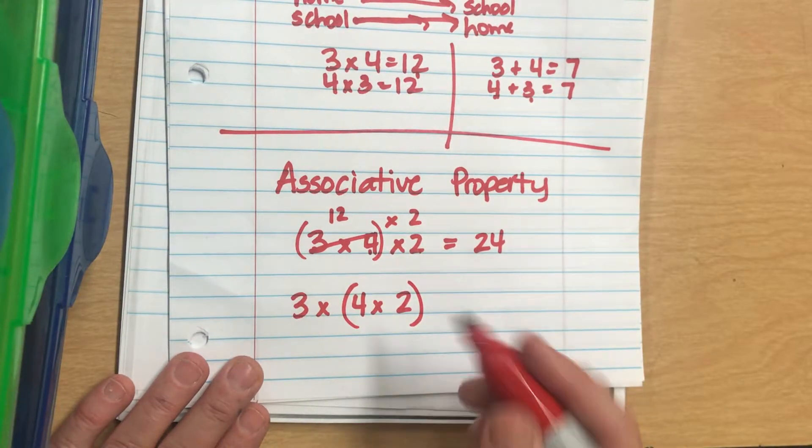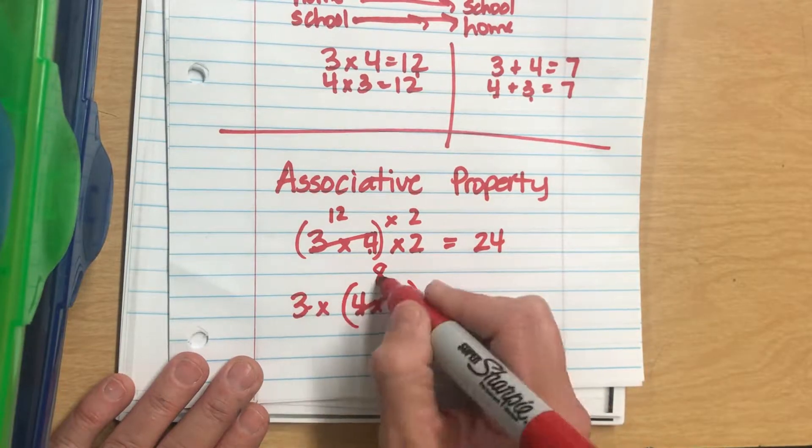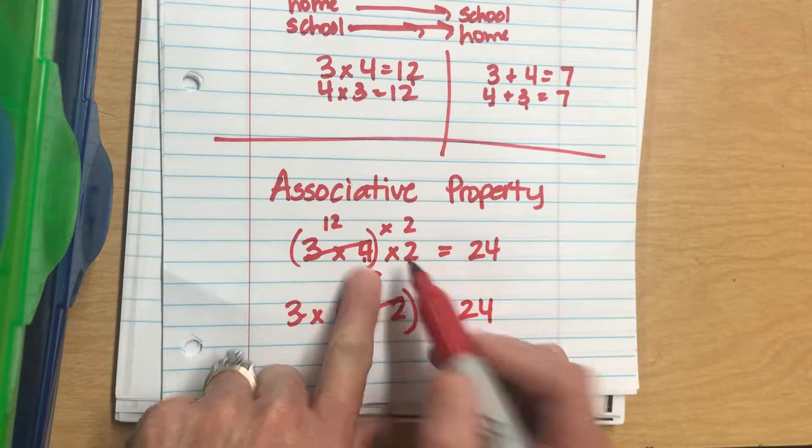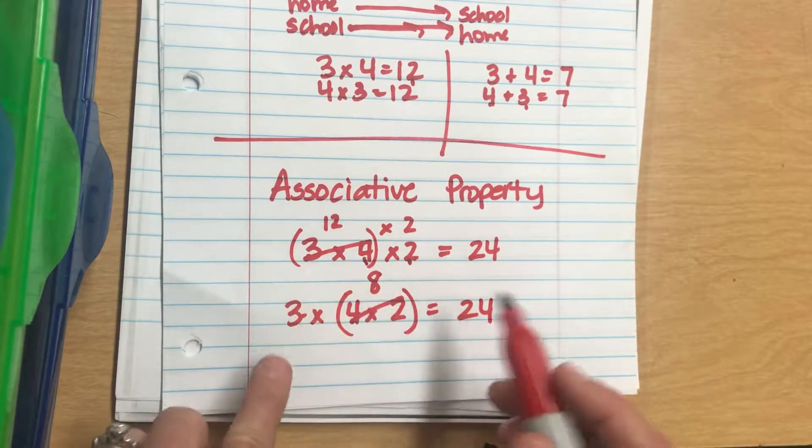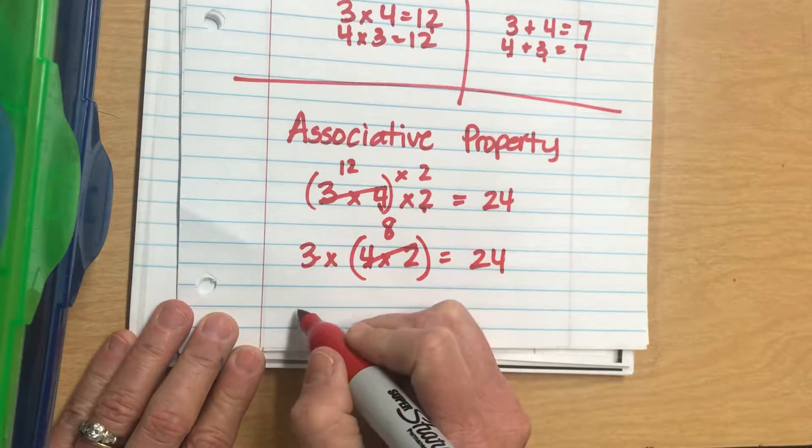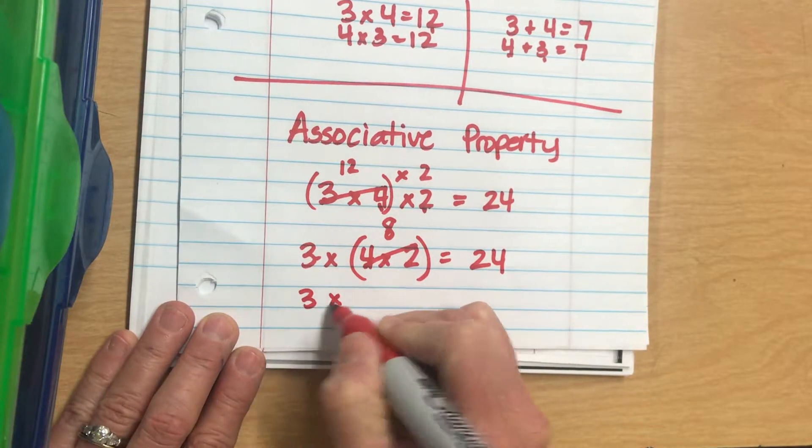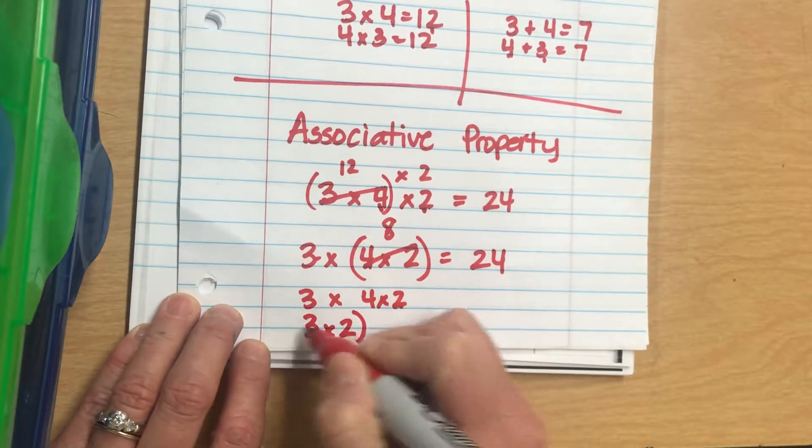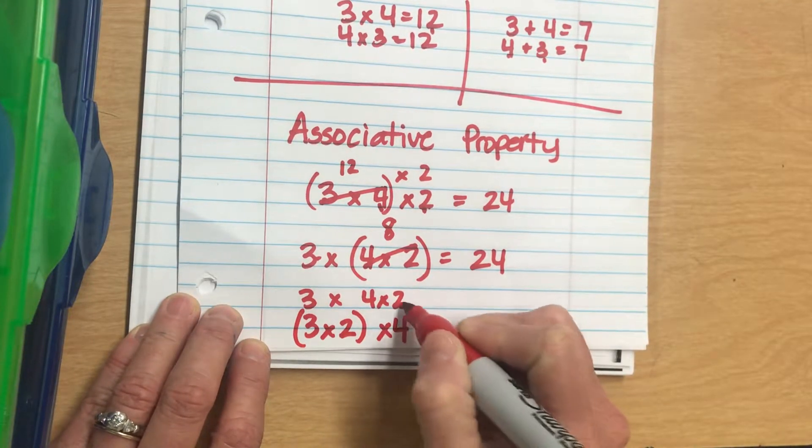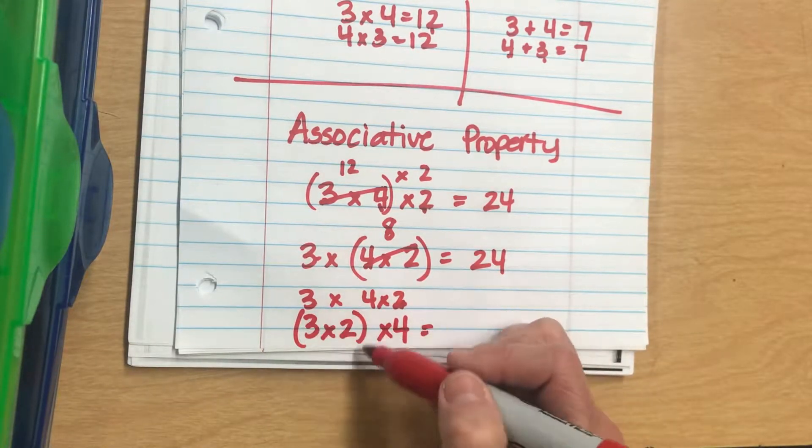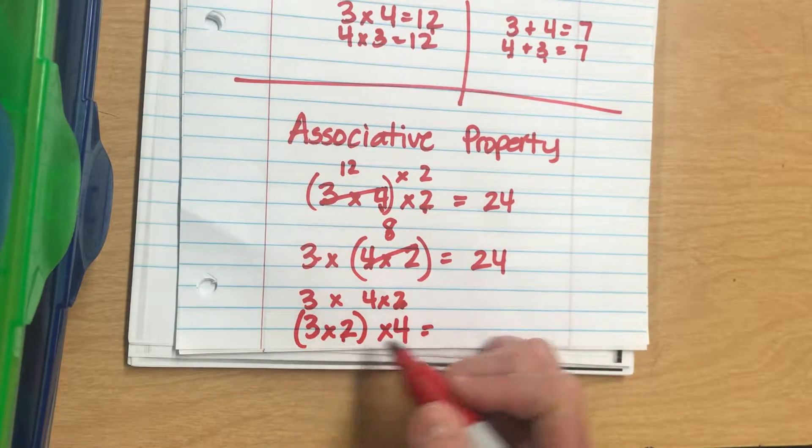Again, 3 times 4 times 2 - the order that my numbers are in aren't changing, but I'm changing what two numbers I'm multiplying first. So 4 times 2 is 8, 3 times 8 equals 24. It doesn't matter if I multiply these two numbers first or those two numbers first. I can do 3 times 2 first and then multiply it by 4. So 3 times 2 is 6 times 4 is 24.